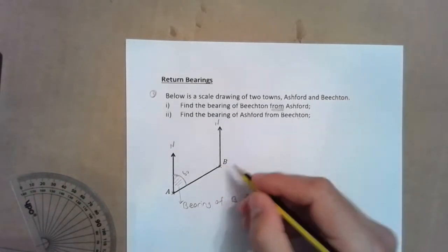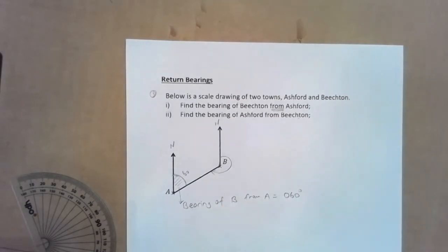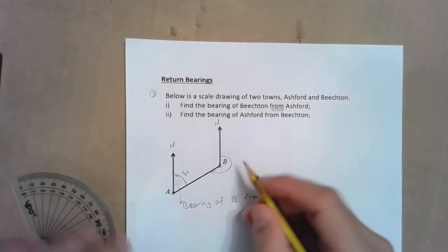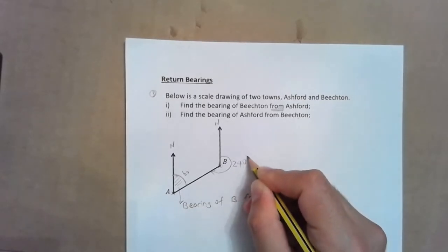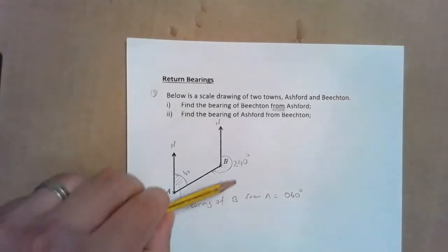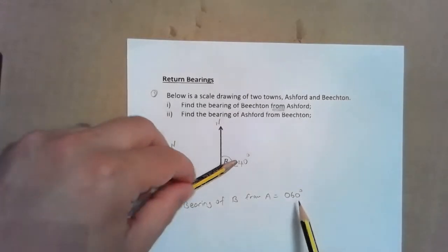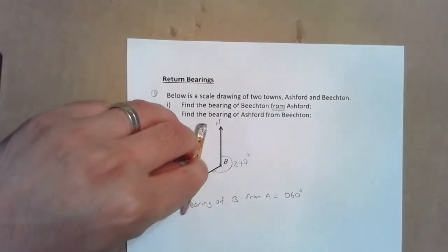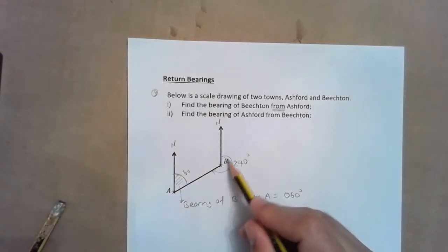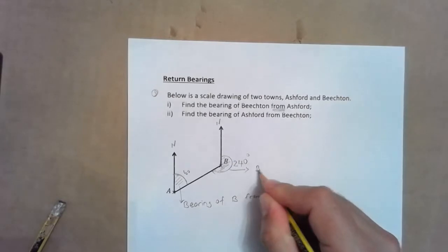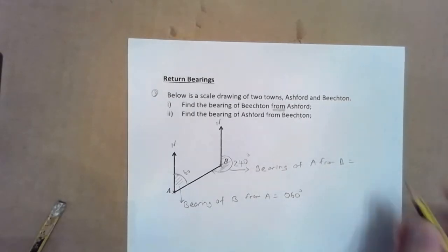The return bearing — Ashford from Bilton — is going back that way. From north, clockwise turn until we get back, that is going to be 240 degrees. Why? Because if I'm traveling at a bearing of 060, the return bearing adds 180 degrees to the original bearing.